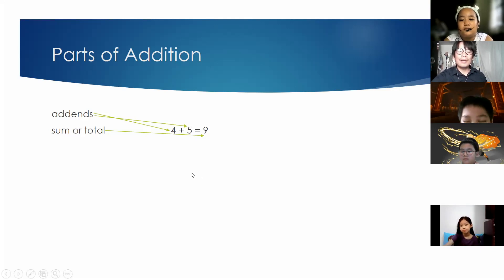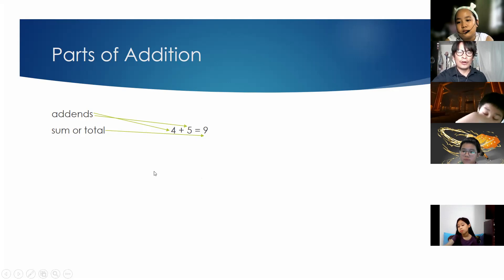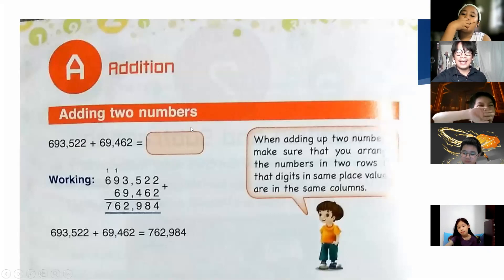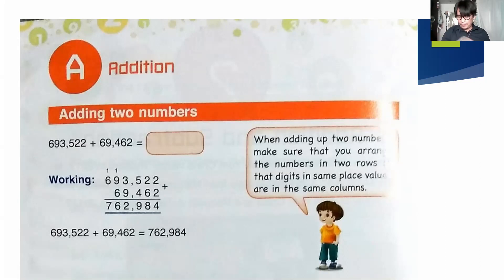We say 'addends' with the letter S because there are two addends — sometimes there are three addends or more. Now let's go back to our textbook. Let's begin with adding two numbers. Please turn to page 16.